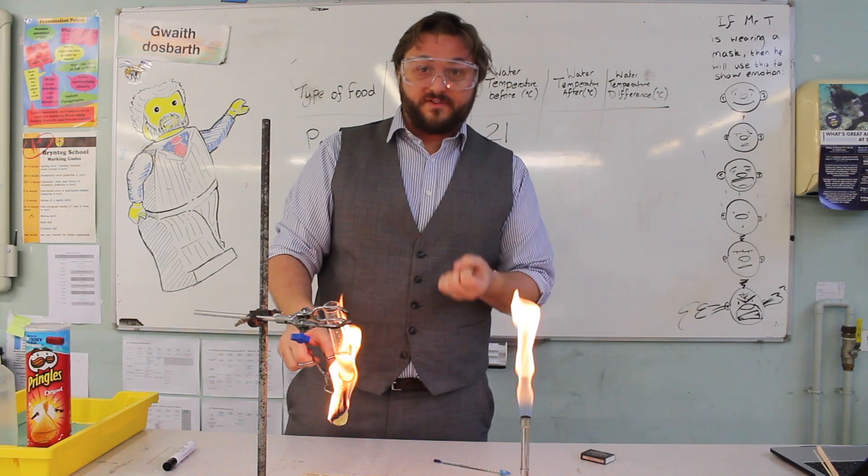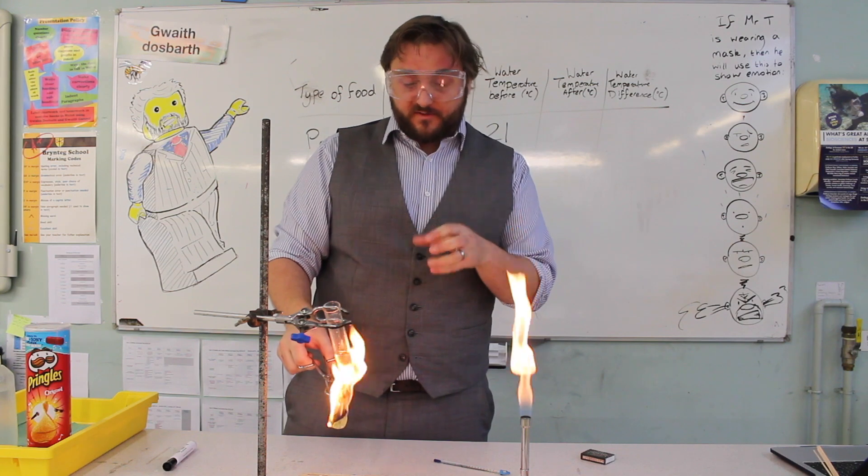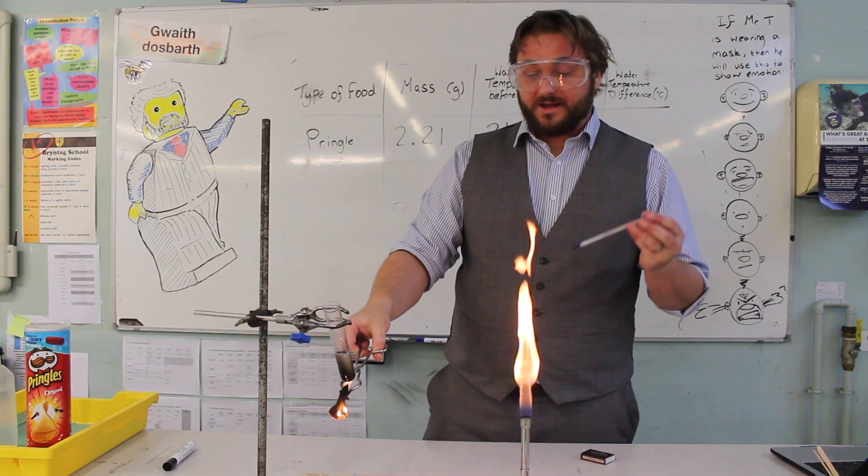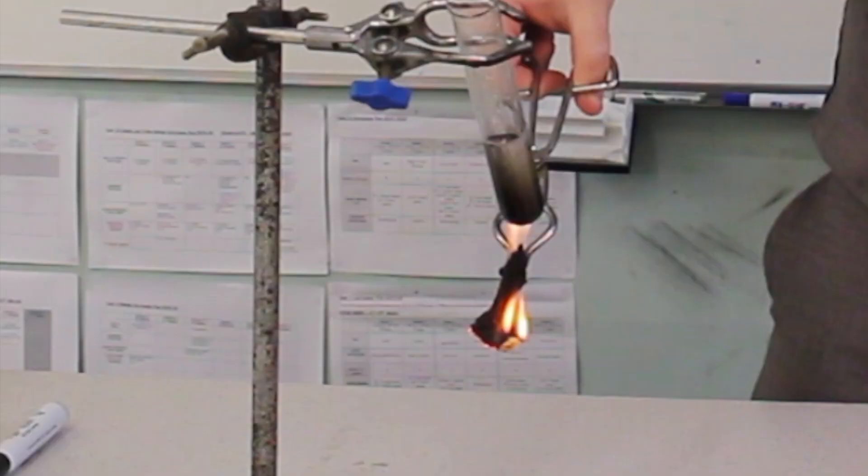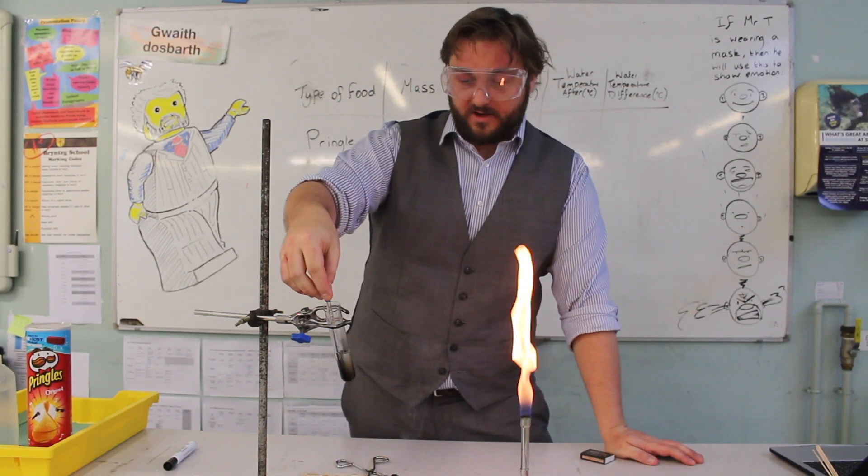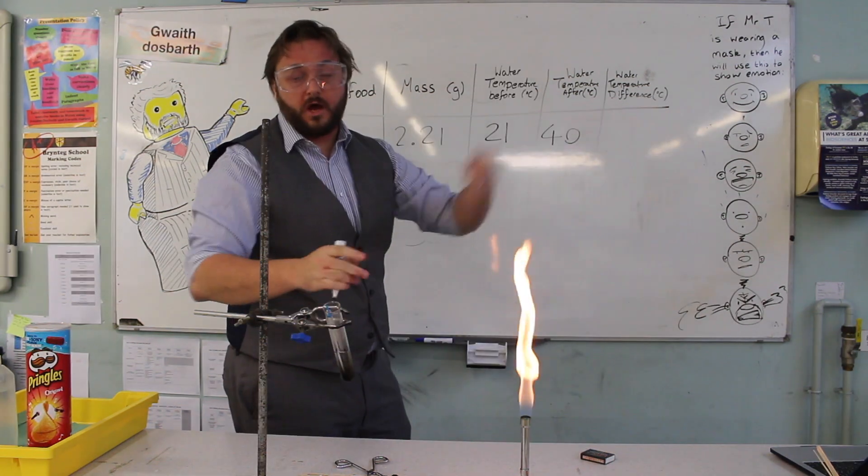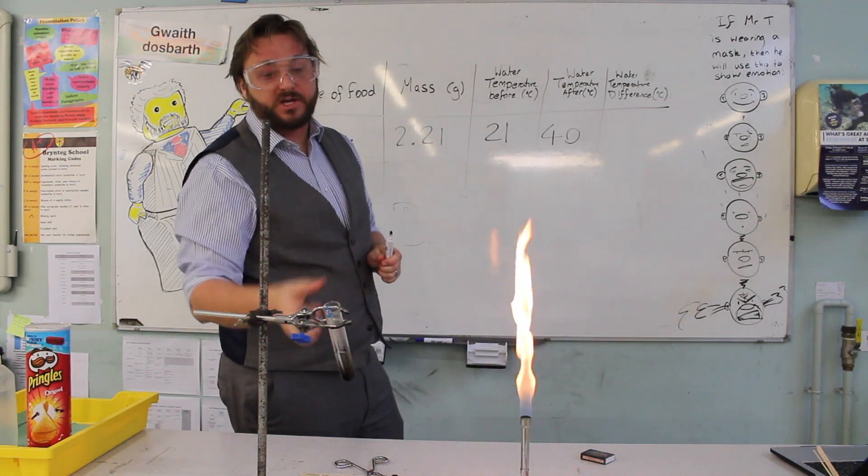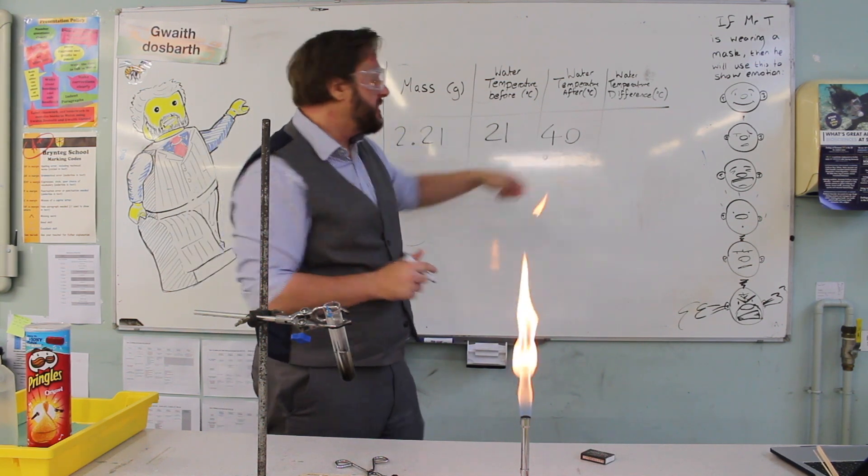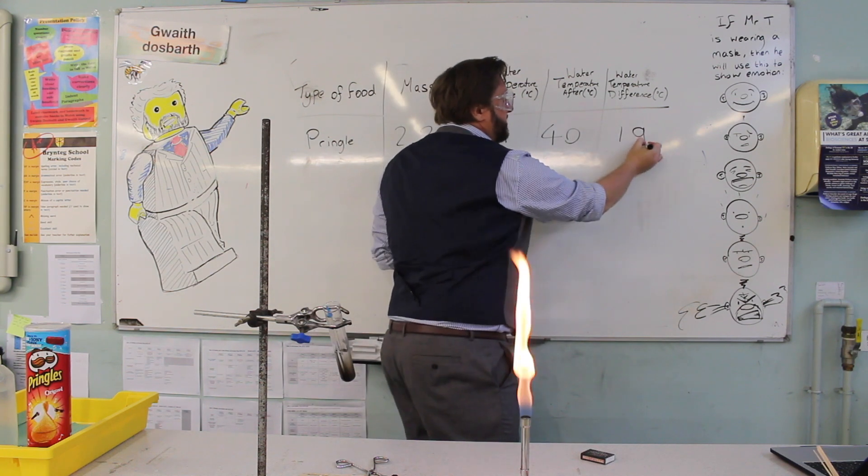As it burns, all of the chemical energy that was stored in the crisp is being released. It's being released as heat and it's being released as light. When the flame starts to die down, you want to get your thermometer ready. And once all of the flames are out, you want to immediately carefully measure the temperature of the water. So the water has heated up because it's gotten all the heat energy from that burning crisp. It's gone up from 21 to 40 degrees centigrade, which means it's increased by about 19 degrees centigrade.